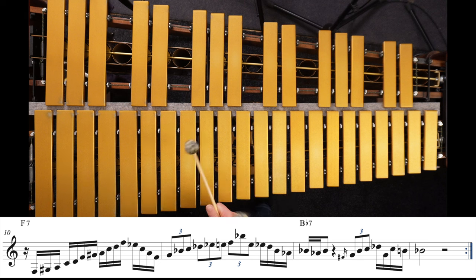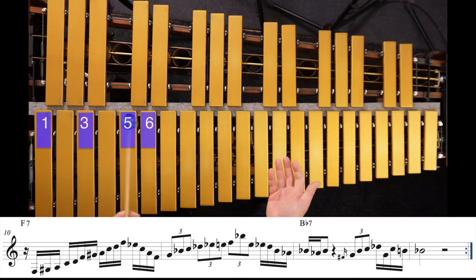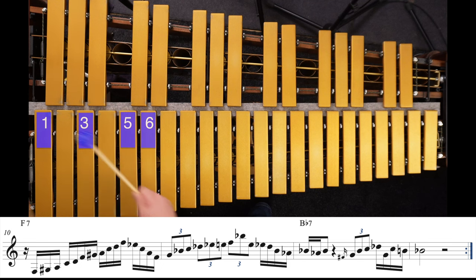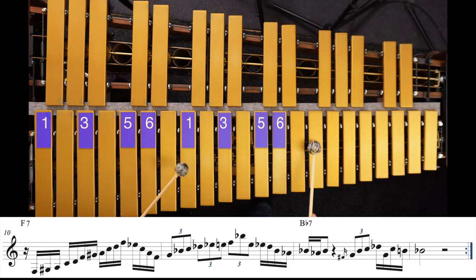Then on the F7 we have this F major six shape, but I've added a chromatic passing tone here and then I spread it up over two octaves up to the top F here.